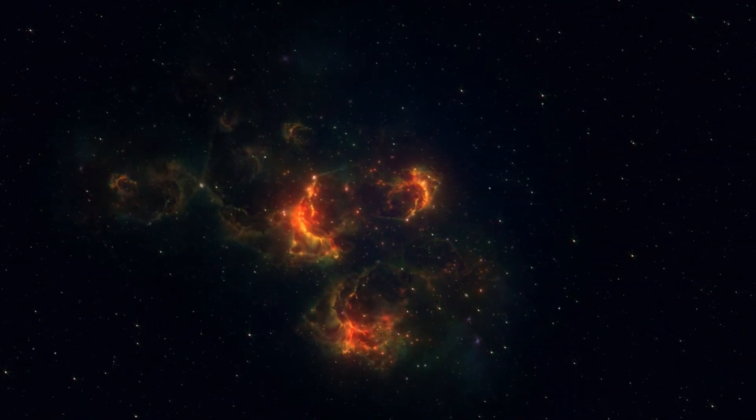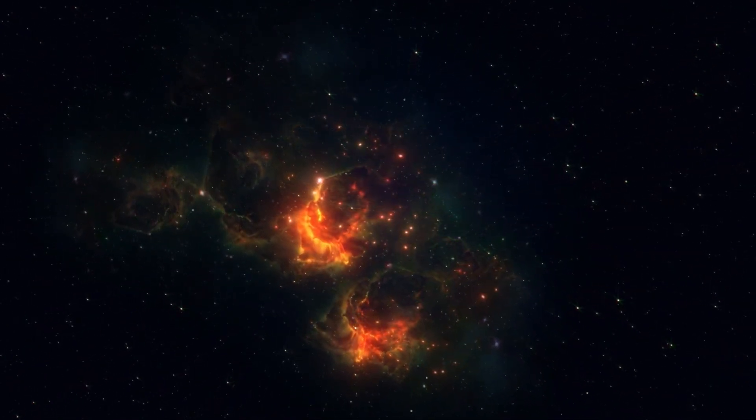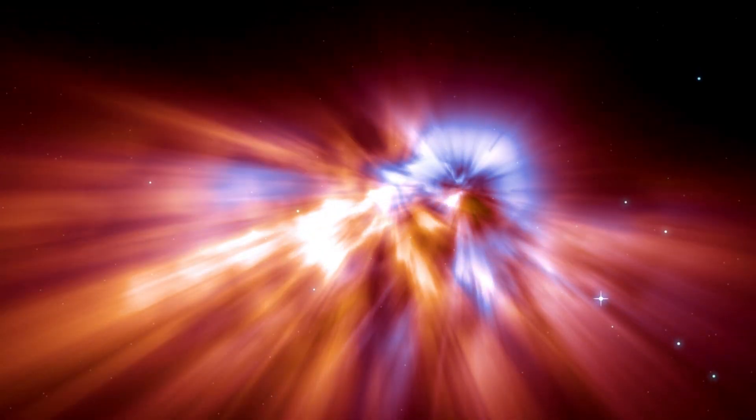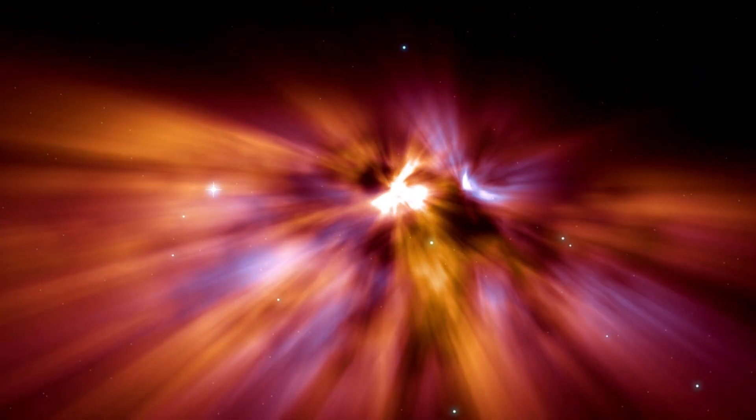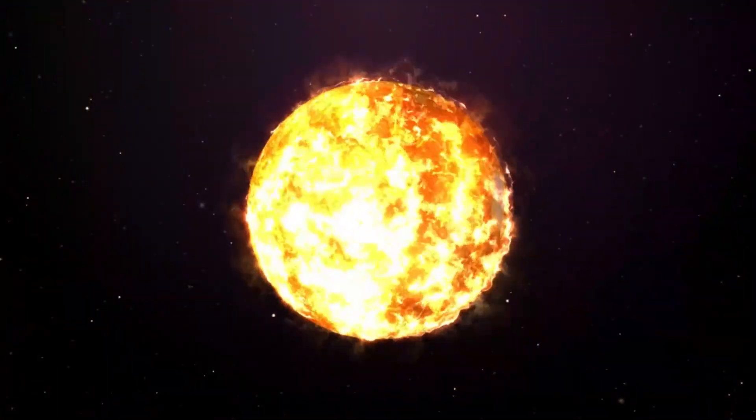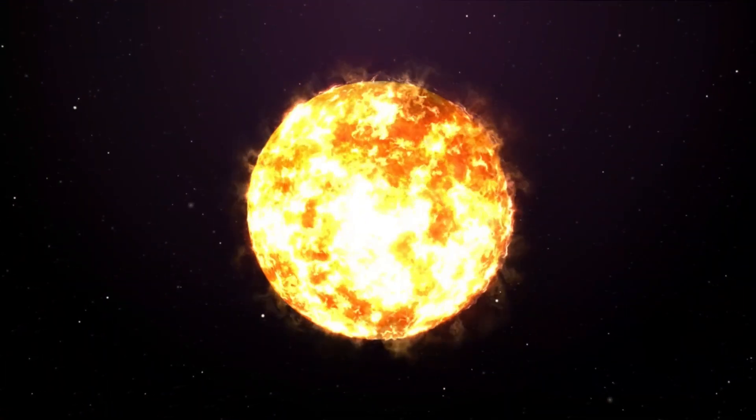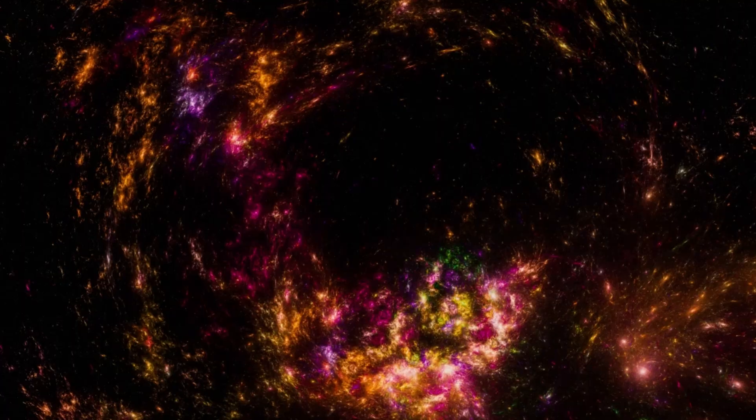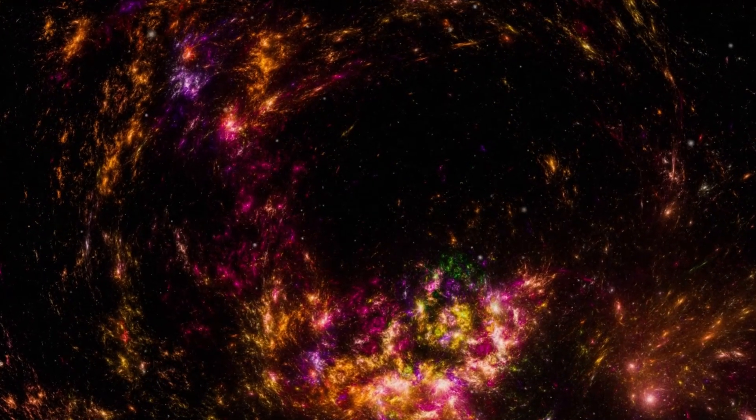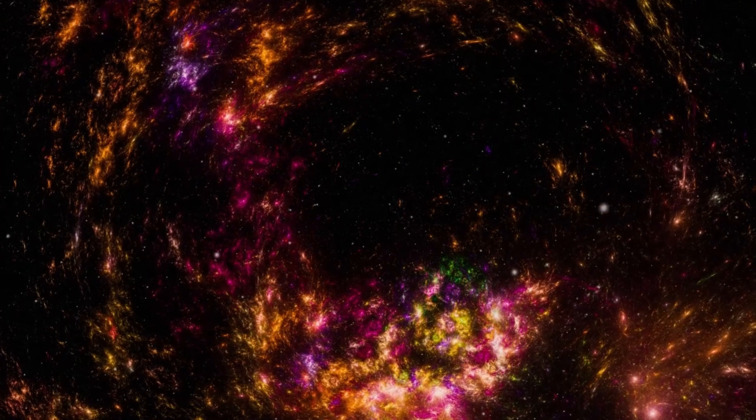Next in line were the Population II stars, forming a bit later but still in the universe's early days. Their original materials were light on heavy elements, especially iron. Many of them danced through their stellar life cycles, bursting into supernovas and adding more heavy elements to the universal mix. Finally, the Population I stars, including our Sun, emerged as cosmic latecomers, forming from enriched gas clouds mingling with remnants from the earlier Population II stars.